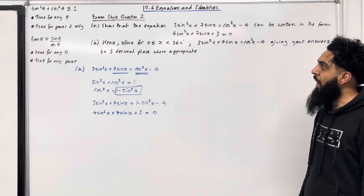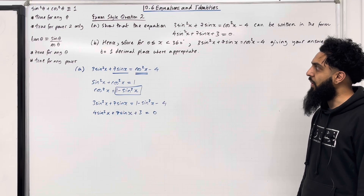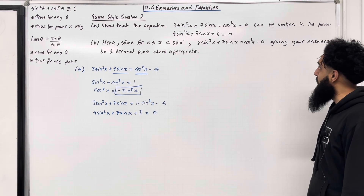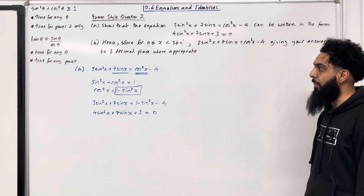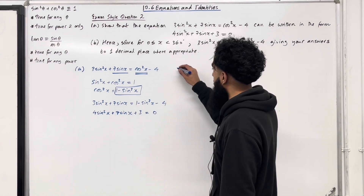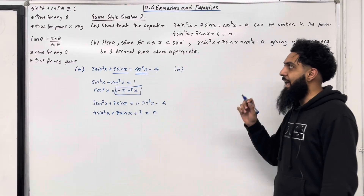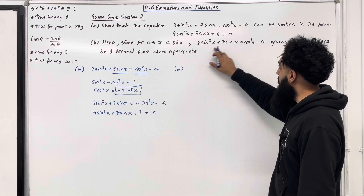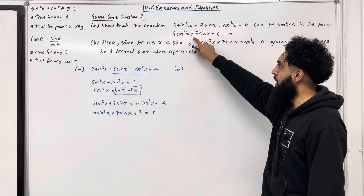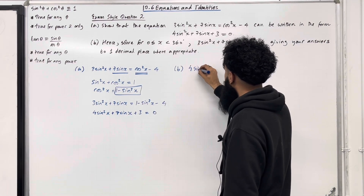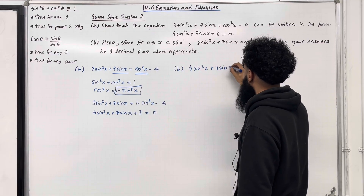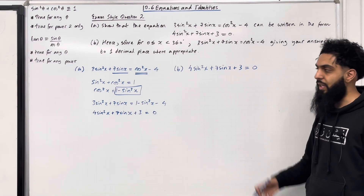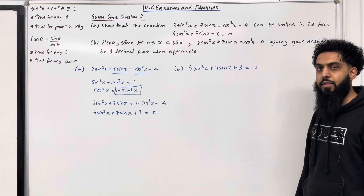Moving on to Part B: hence, solve for 0° ≤ x < 360°, 3sin²x + 7sin x = cos²x − 4, giving answers to one decimal place where appropriate. The word 'hence' means we refer back to part A, so solving this equation is the same as solving 4sin²x + 7sin x + 3 = 0. This is a quadratic trigonometric equation so we apply the quadratic formula to find solutions for sin x.